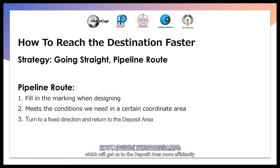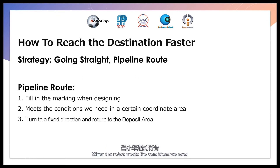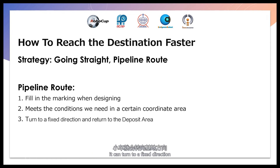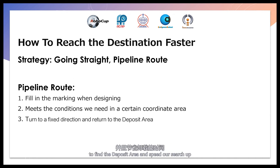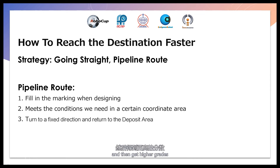Another tactic is the pipeline route, which will get us to the deposit area more efficiently. We will first fill in the marking when designing. Once the robot meets the conditions we need in a certain coordinate area, it can turn to a fixed direction and return to the deposit area. This method can greatly reduce the time to find the deposit area and speed up our search.